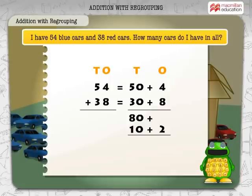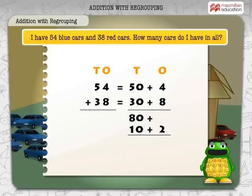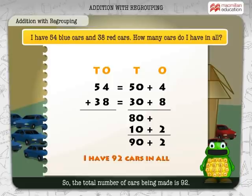This is also written as shown here. Now, let us regroup and add the tens together. 80 plus 10 is equal to 90. And then add the two ones. So, the total number of cars is 92.